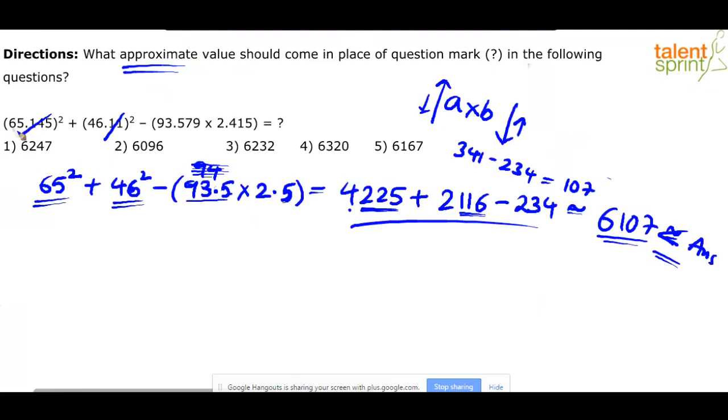Why is it so? Because 65.145 was reduced to 65. 46.11 was reduced to 46. Here we have taken very close to the actual answer. So it should be more than 6,107. Now right to eliminate.